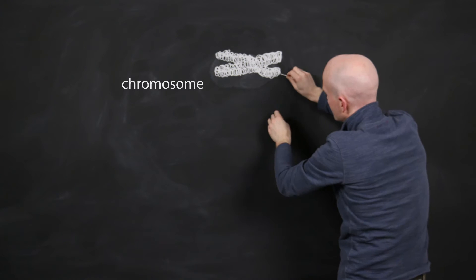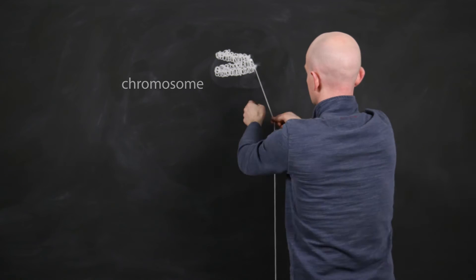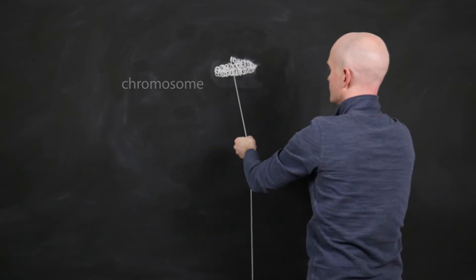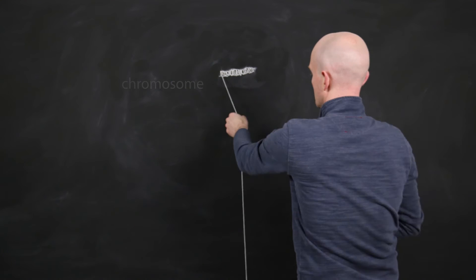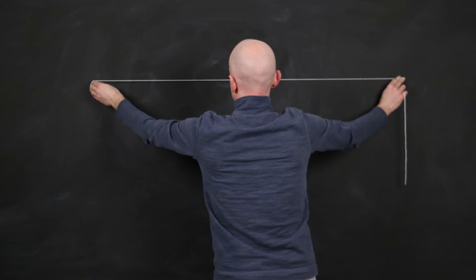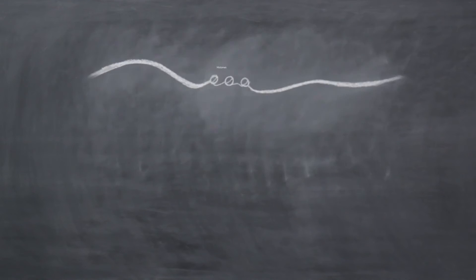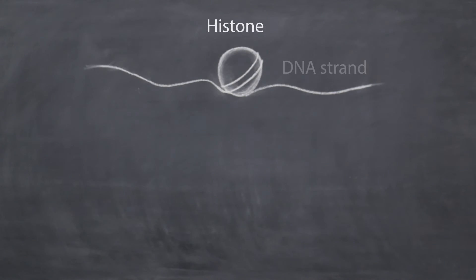We need to unravel the chromosome into what is called chromatin fiber in order to access the DNA for this neuron. Let's now unpack the chromatin fiber. Chromatin is made up of DNA that is tightly wrapped around proteins known as histones.